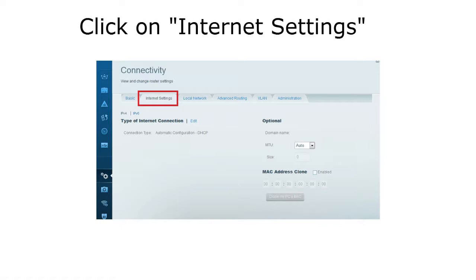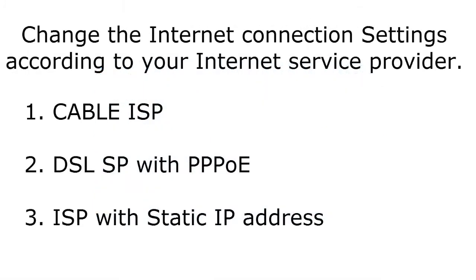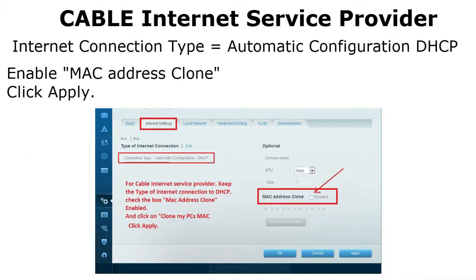There are three types of internet connections. The first is a cable internet service provider. The second is a DSL internet service provider with PPPoE username and password. The third is a static IP address from your ISP. For cable internet, change the internet connection type to Automatic Configuration DHCP, enable MAC Address Clone by checking that box, and click Apply.